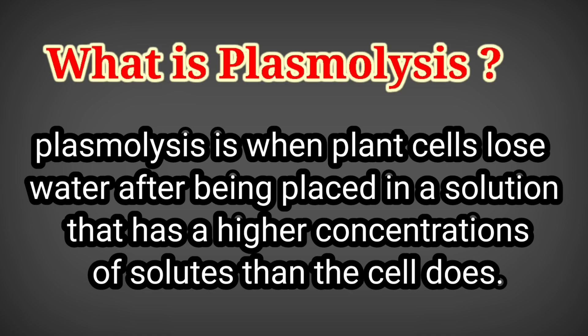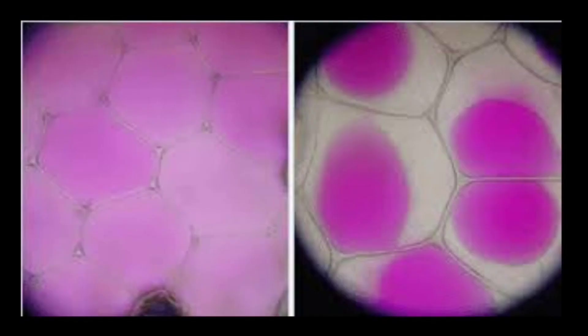See here these figures. These are real leaf cells. When placed in a hypertonic solution, the cells get plasmolyzed.